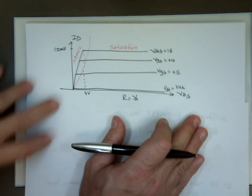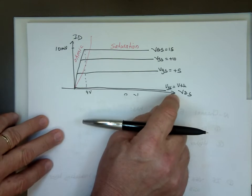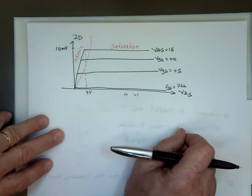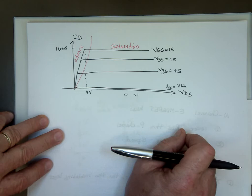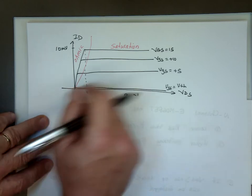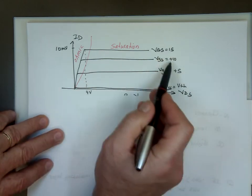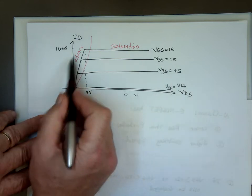I put a picture like this, and this is really VDS versus ID, if you're looking at it. And it will look something like this: VGS equals plus 15, plus 10, plus 5, there'll be some numbers here.